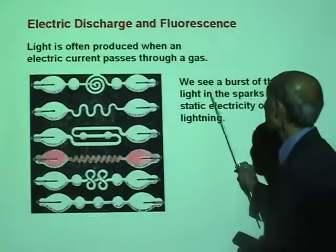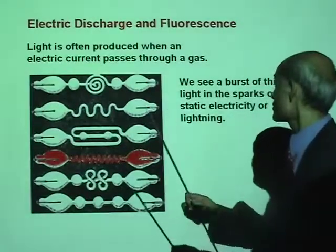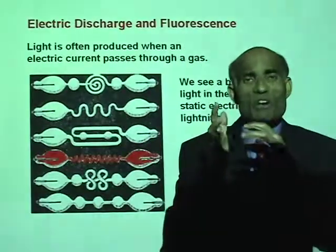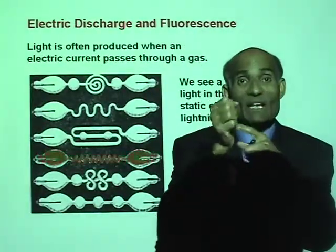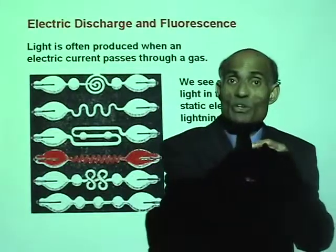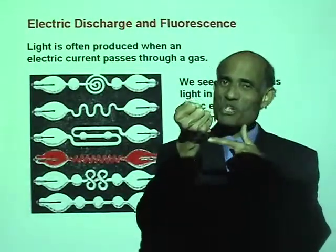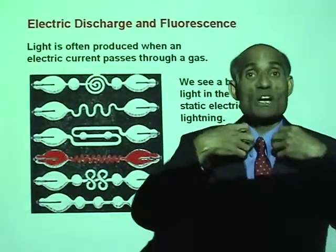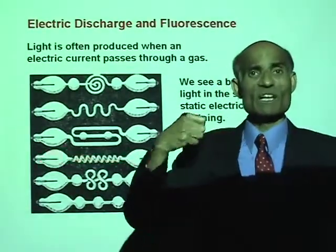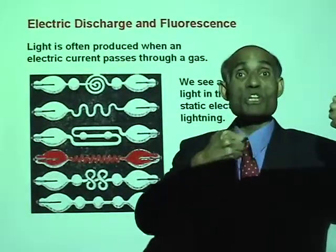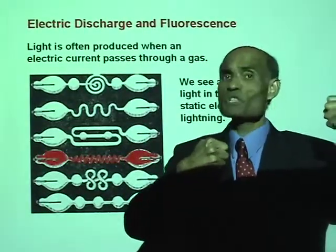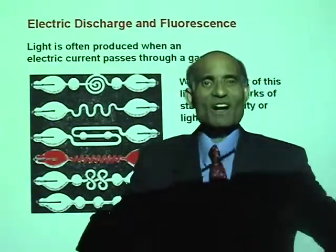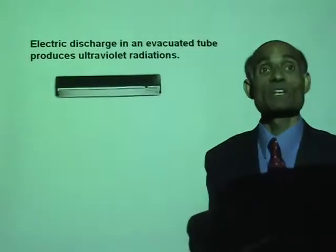We see a burst of this light in the sparks of static electricity. Have you ever seen a spark flying off your hand when you try to open the door of your car? If you wear a polyester shirt and when you remove it, electric sparks will jump from the shirt to your body. They are all examples of electric discharge that produces light.